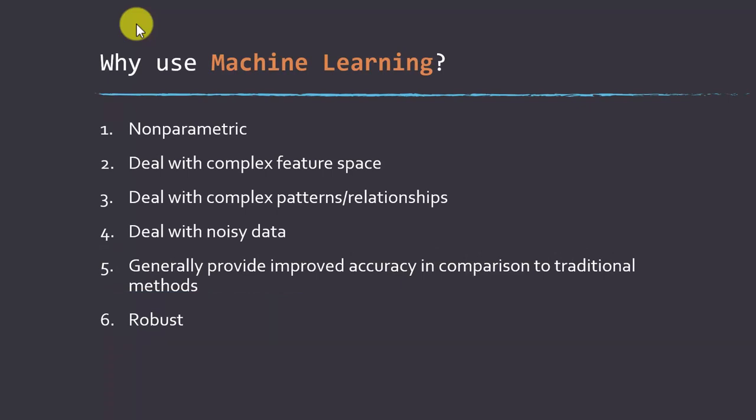Why use machine learning as opposed to parametric methods like linear regression? One reason is that they are nonparametric. If you have noisy, complex data, they're not going to make assumptions about the data distribution that may be incorrect. They can deal with a complex feature space — data of different types like categorical and continuous, data values on different scales, data far from normally distributed, and large feature spaces with lots of variables.